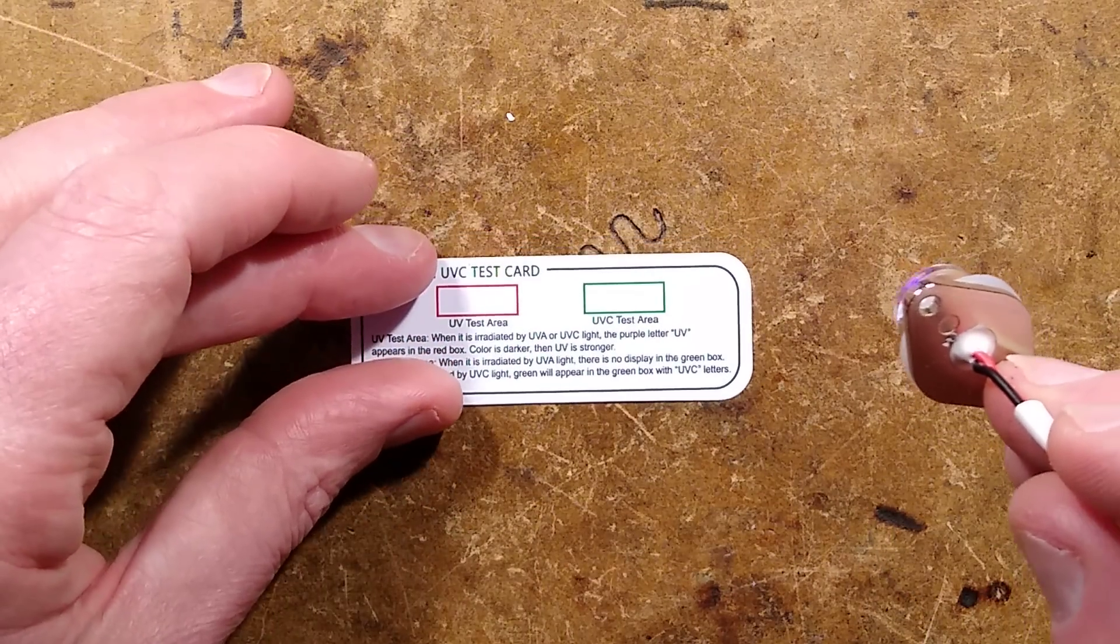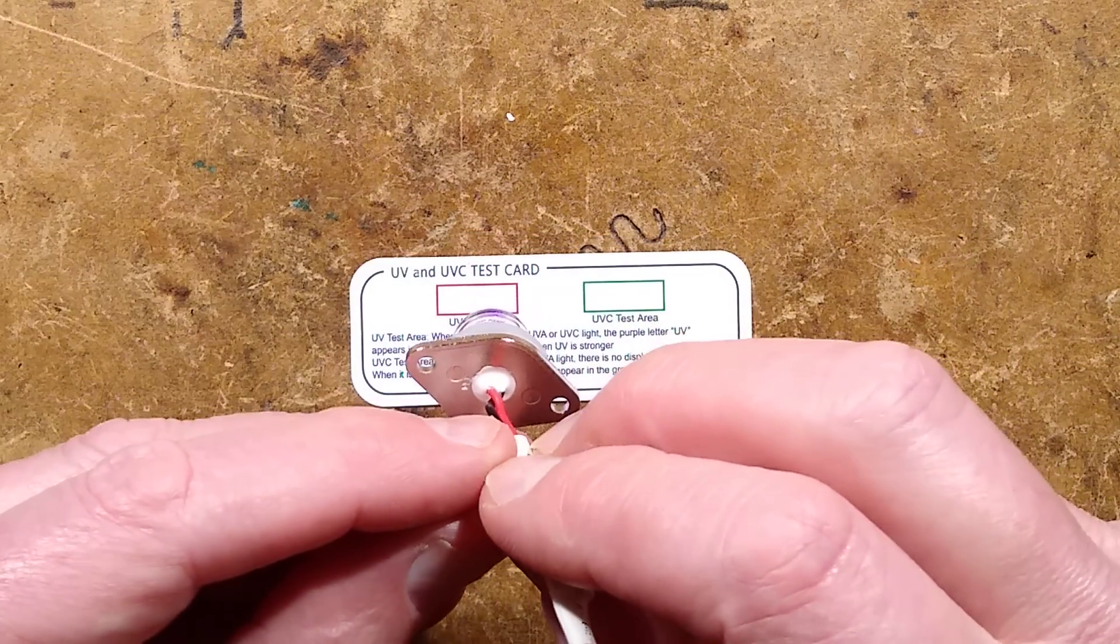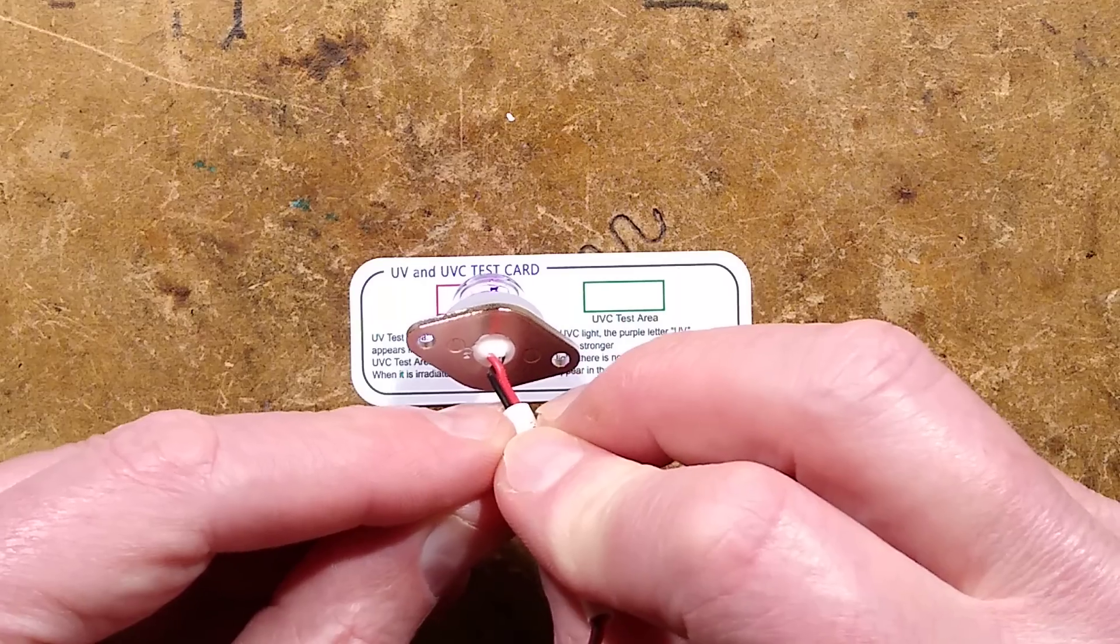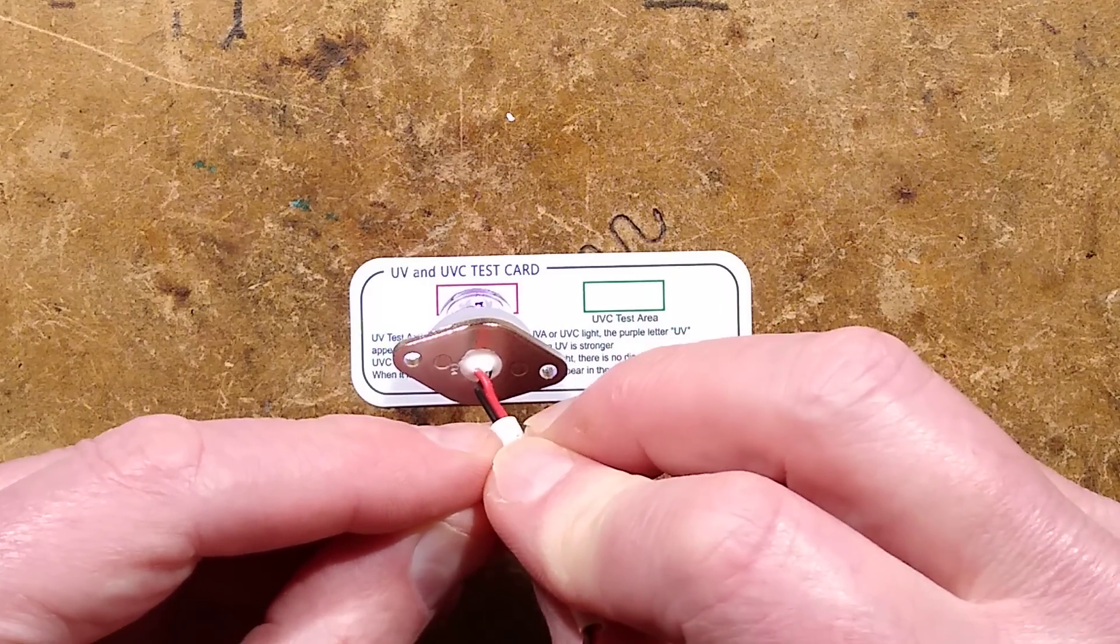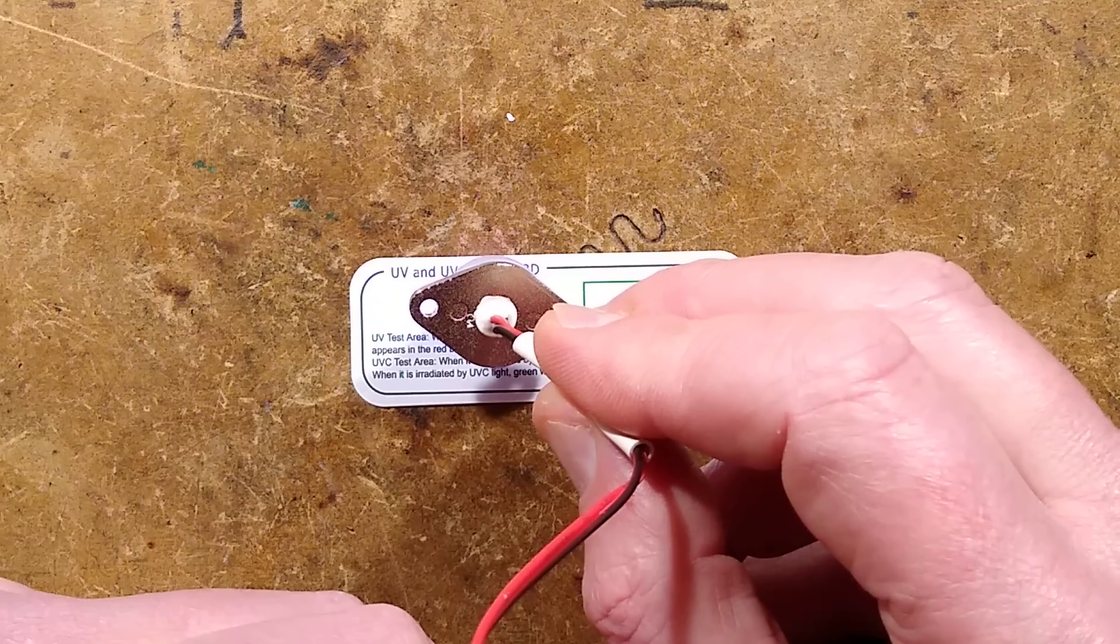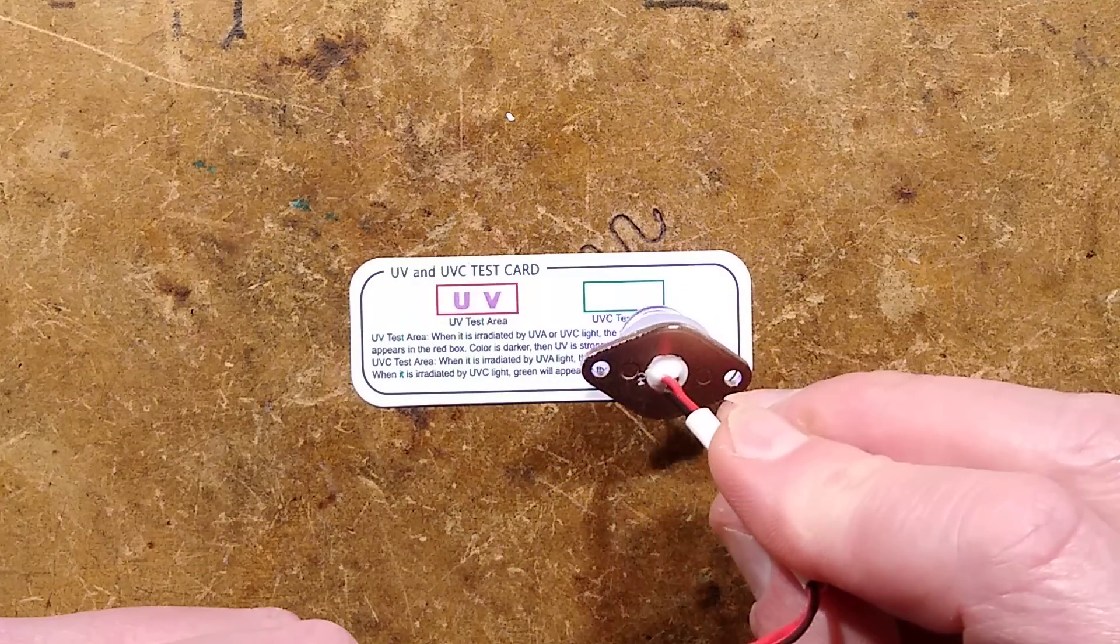If I put this near the UVA detector panel, it shows it changing color because that is a UVA emitting style LED in there, this is a purple one.